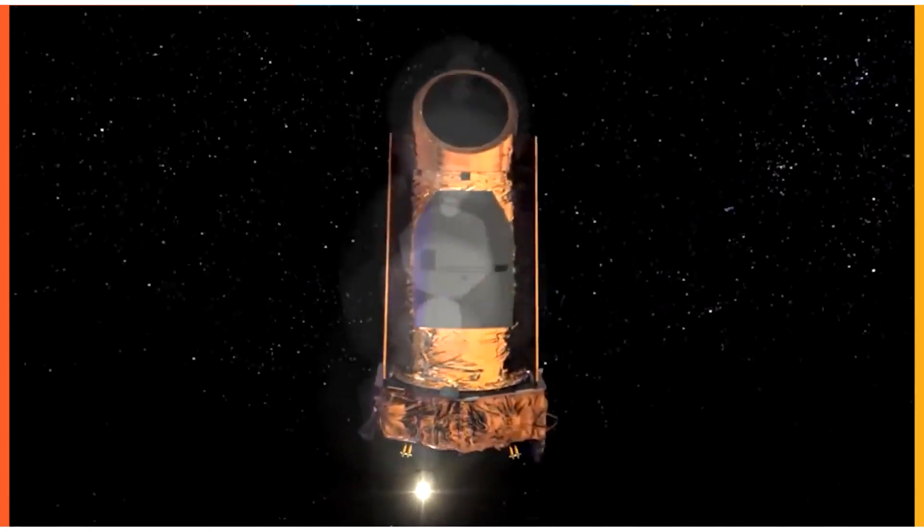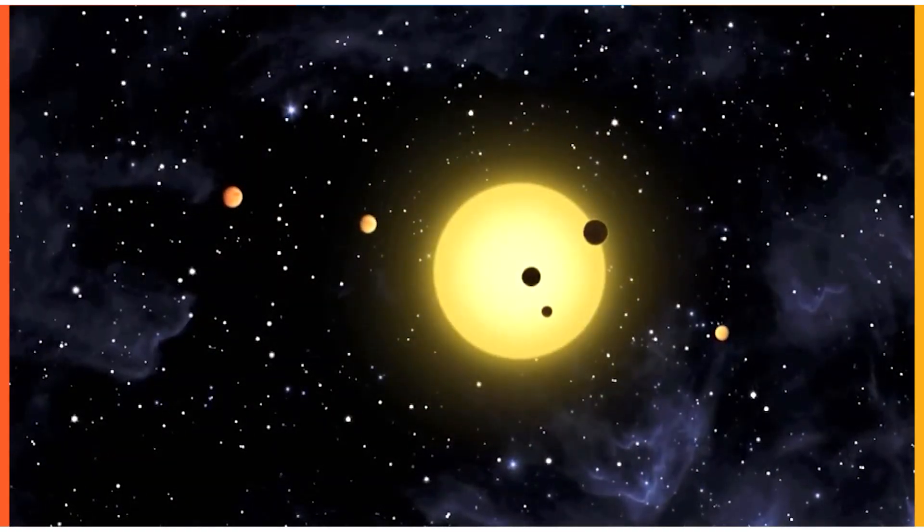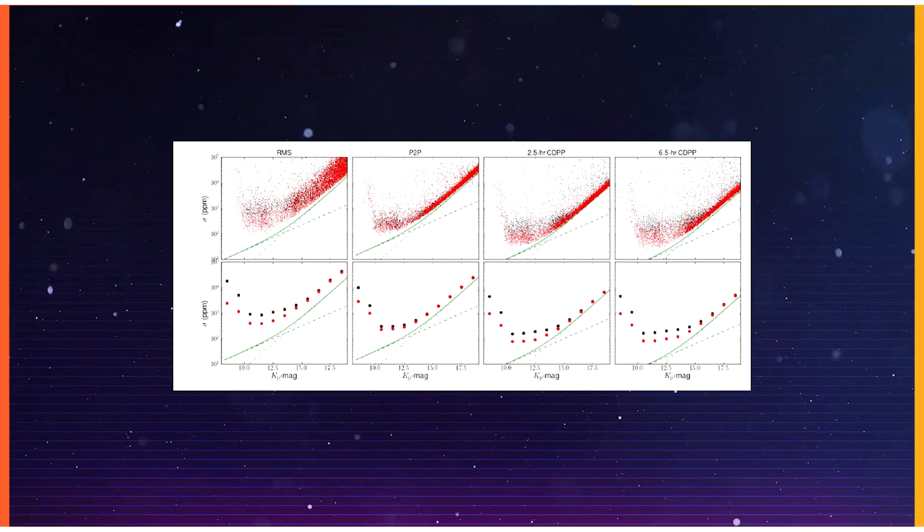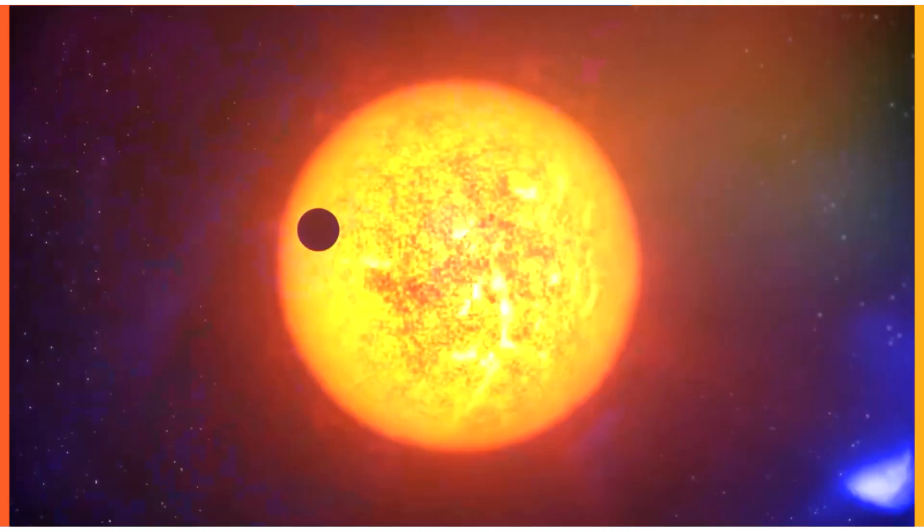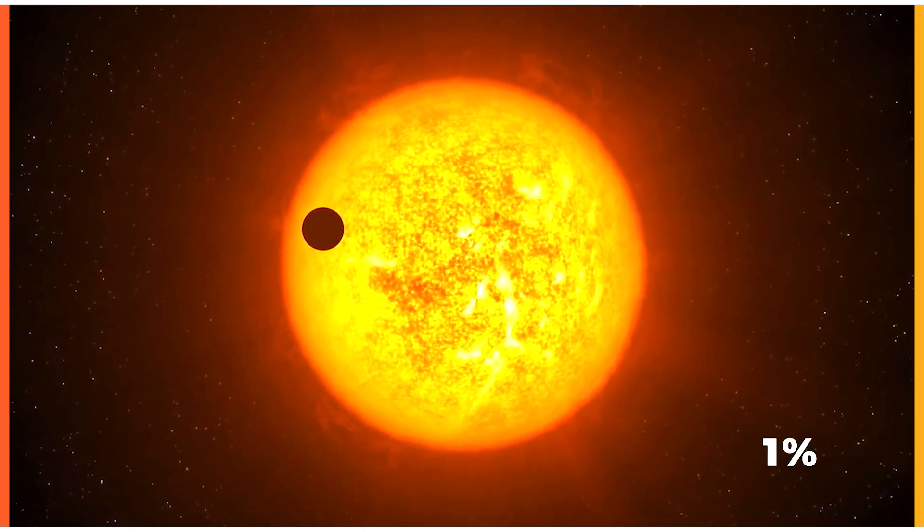One of the Kepler Space Telescope's superpowers is its ability to estimate the brightness of a star to a fraction of a percent. Precision photometry is required to detect the small dimming generated by a planet passing in front of its star. Jupiter, for example, passing in front of the Sun, blocks around one percent of the Sun's light.